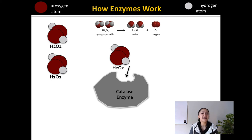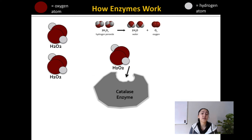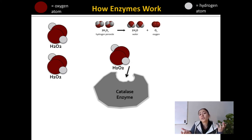Our body produces catalase because hydrogen peroxide is very toxic to our cells. Hydrogen peroxide is actually naturally formed in our body through specific metabolic processes — for example, when we break down fats within our cells, one of the byproducts is hydrogen peroxide. Since hydrogen peroxide naturally builds up in our body, we have to have mechanisms to break it down to prevent it from causing harmful effects.